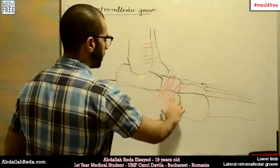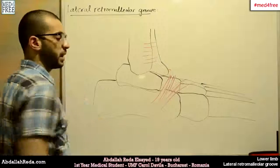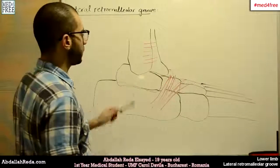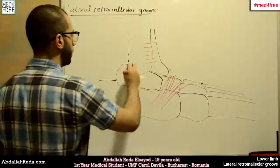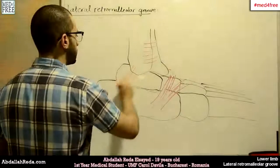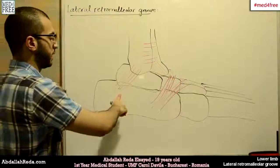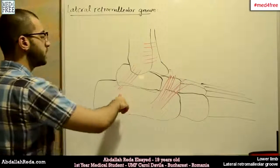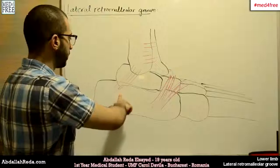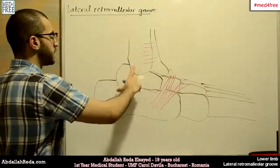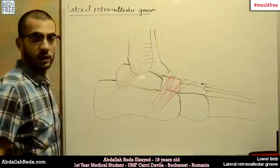The lower part of this retinaculum is called the inferior peroneal retinaculum, or the inferior fibular retinaculum. There is also the superior peroneal retinaculum, which attaches on the lateral aspect of the fibula and the lateral aspect of the calcaneus bone. This retinaculum is the one that covers the lateral retromalleolar groove.